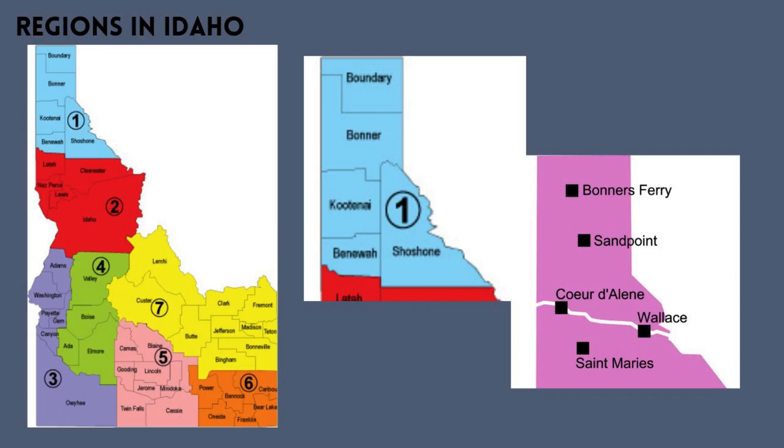Let's start with the northernmost region, Region 1, which encompasses Coeur d'Alene, Sandpoint, and Wallace. All numbers I'm sharing with you are averages. This region has 174 sunny days per year, 27 inches of rain per year, 122 days of precipitation per year, an average July high of 82 degrees, an average January low of 24 degrees, and 42 inches of snowfall per year.